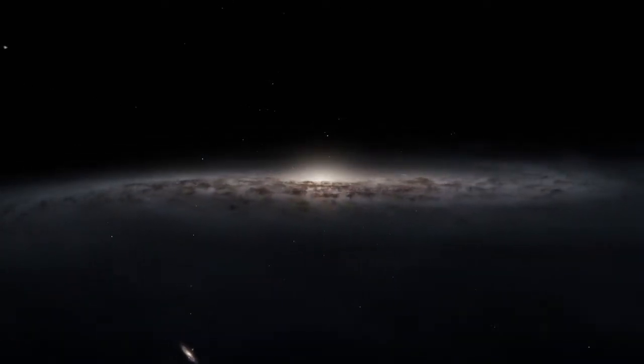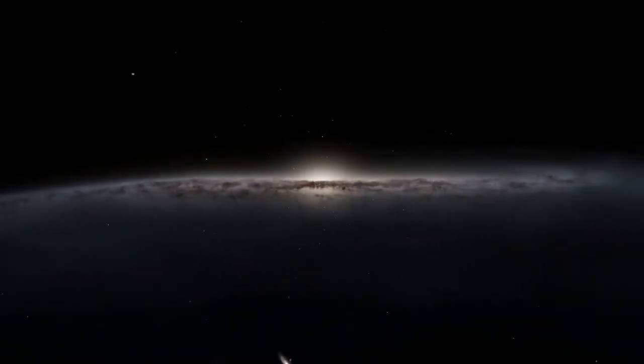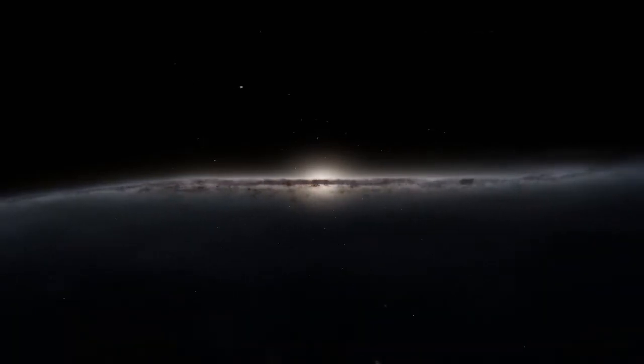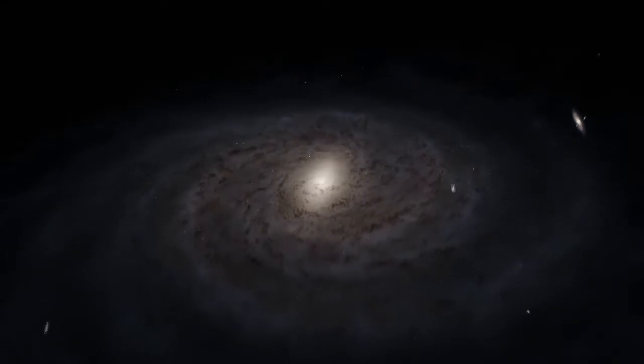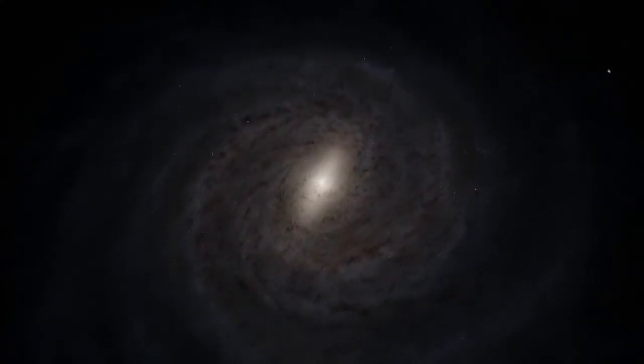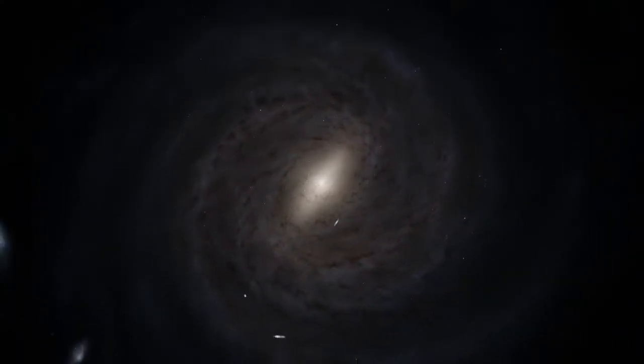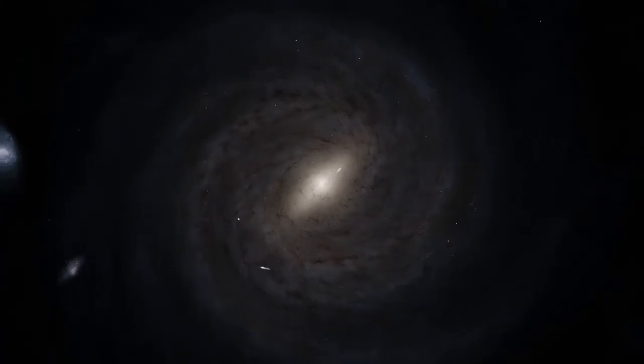Our home galaxy is 100,000 light-years across, but only 1,000 light-years thick. If we look face-on, we can see interesting structures. Spiral arms, where blue, young stars are more common, and darker lanes made of interstellar dust.